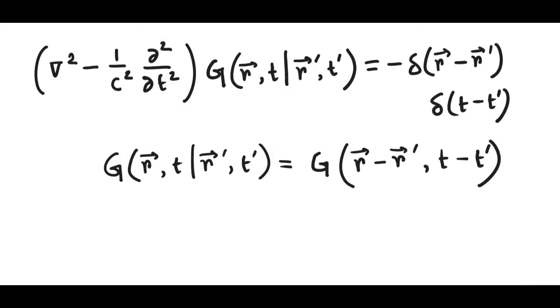We can further simplify it by taking the source at the origin. So for example, if the source is somewhere here, we shift our origin to that place, so the source stays at the origin. And by making that simplification, we can write R' equal to 0, which is also a vector, and T' equal to 0.